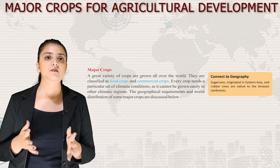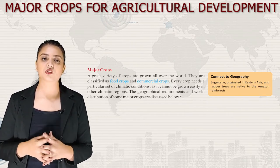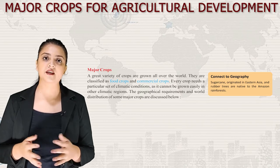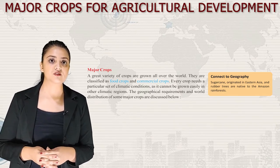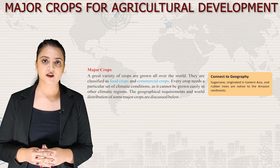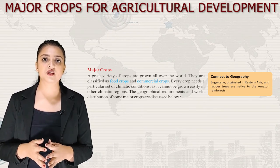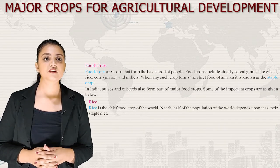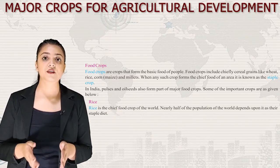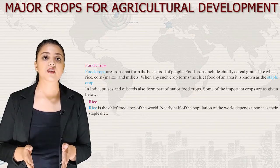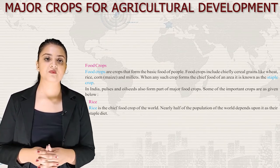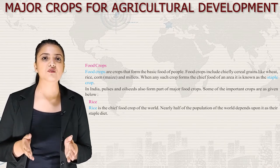Now let's talk about major crops. A great variety of crops are grown all over the world, classified as food crops and commercial crops. Every crop needs a particular set of climatic conditions. Sugarcane originated in eastern Asia and rubber trees are native to the Amazon rainforest. Food crops form the basic food of people and include cereal grains like wheat, rice, corn and millets. When any such crop forms the chief food of an area, it is known as the staple crop. In India, pulses and oilseeds also form part of major food crops.